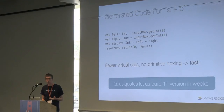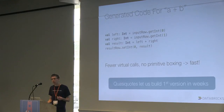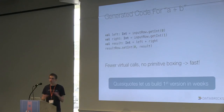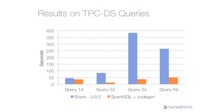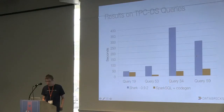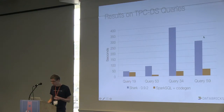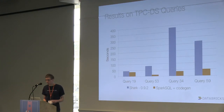The end result is code that's actually really efficient — has the right types, adds them inline, no virtual functions, everything is inlined. We were able to build the first version of this in just a couple of weeks, dealing with many of the expressions. This is again a place where we've had lots of external contributors who know very little about how the rest of Spark SQL works but can put in optimizations for the pieces they care about. In terms of performance, Shark was our previous system using interpretation, and Spark SQL with code generation is quite a few times faster.